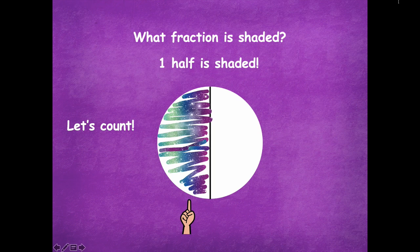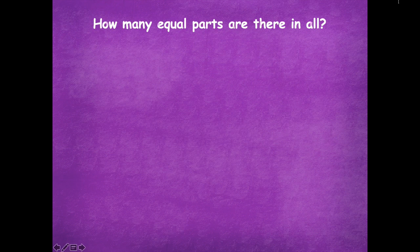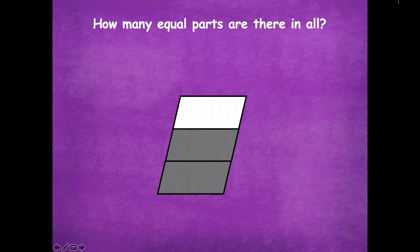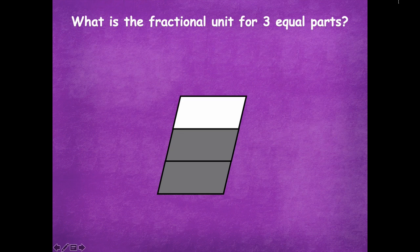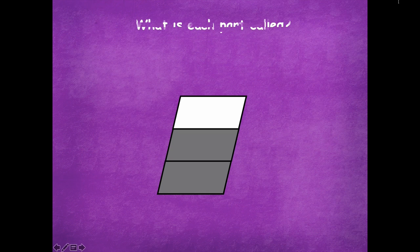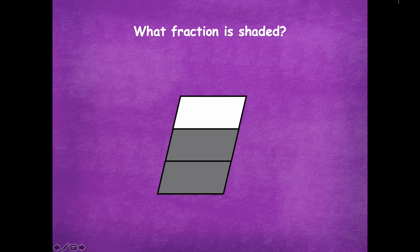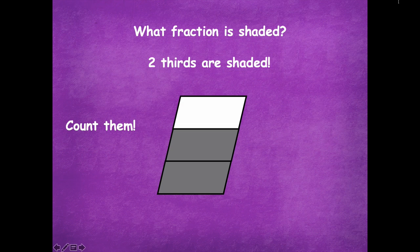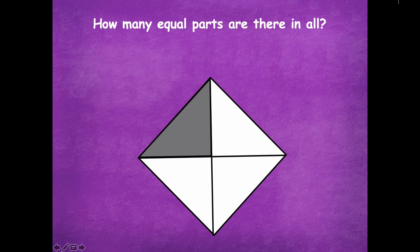Let's look at another one. How many equal parts are there in all? Three. What's the fractional unit for three equal parts? Thirds. What is each part called? One-third. What fraction is shaded? Two-thirds are shaded, because there are two parts shaded. Let's count them: one-third, two-thirds.